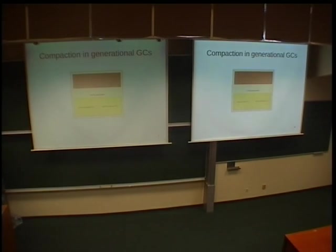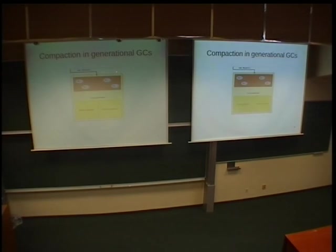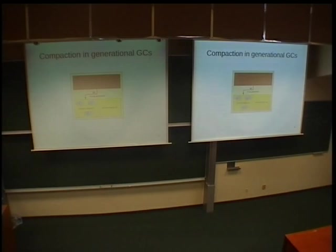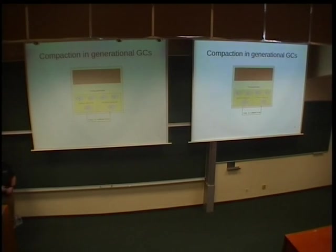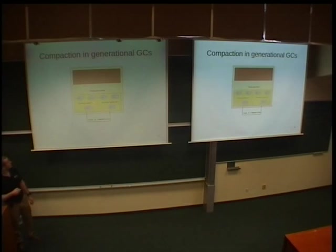How does a generational garbage collector work? There are Eden and two survivor spaces in the new generation. New objects are created in Eden. When Eden is full, the first step is to copy all live objects into one of the survivor spaces. When that survivor space is filled, the second step is to copy and compact objects into the second survivor space. The compaction step is very easy because the second survivor space is empty — only live objects are copied there, which is why compaction is essentially free.